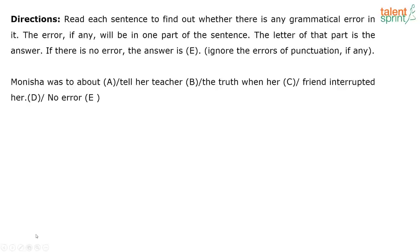Let me start by projecting the PowerPoint. Okay, so this is our first question: 'Manisha was to about tell her teacher the truth when her friend interrupted her.' You can identify which part has the error. Pretty simple — as soon as we read it, we know there's something funny or awkward in part A. 'Manisha was to about' — that doesn't make sense in terms of the ordering of words in the sentence.